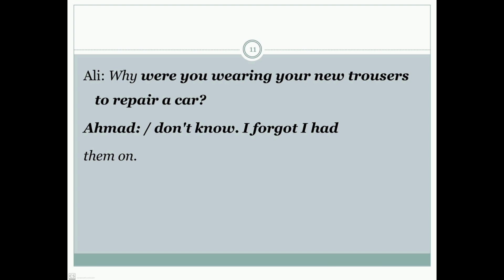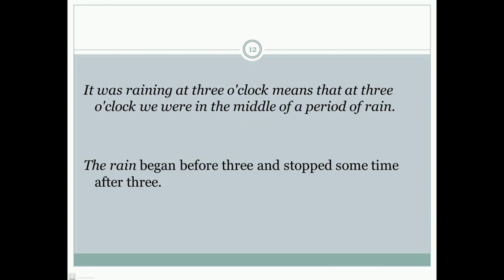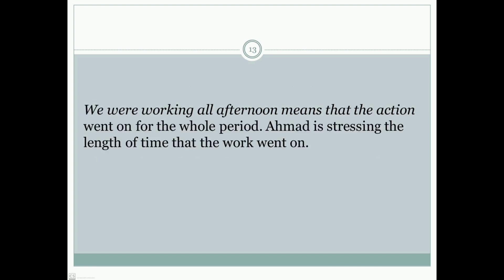Ali: 'Why were you wearing your new trousers to repair a car?' Ahmad: 'Don't know, I forgot I had them on.' Now, focus: 'It was raining at three o'clock' means that at two o'clock we were in the middle of a period of rain — the rain began before three and stopped sometime after three. 'We were working all afternoon' means the action went on for the whole period — Ahmad is stressing the length of time that the work went on.